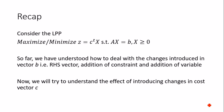Before we start, let's see what we have done so far. We have already understood three cases: changes introduced in the right-hand side vector, addition of a constraint, and addition of a variable. Now we want to introduce the effect of changes in the cost vector, which is also called the objective function.